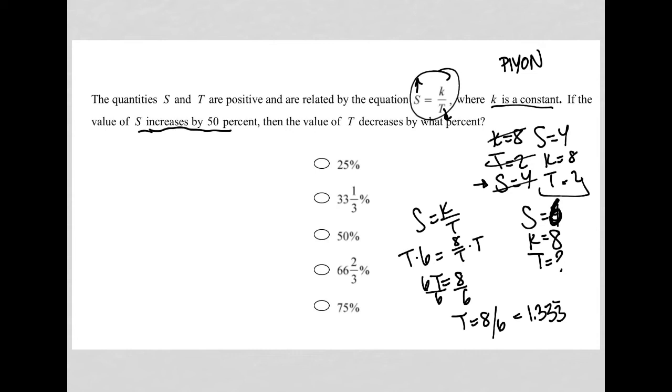So the question isn't asking what the value of T is. It's asking what the value of T decreases by what percent. So again, my baseline is saying that T was equal to 2. Now T is equal to 1.33, you know, so on and so forth. So this is a difference of 0.666, you know, 6, 7. So that continues on.